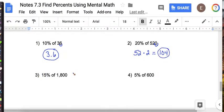Okay, number 3 is 15% of 1,800. So we need to do the 10% trick, which gives me 180. Now I have to take half of that so I can find 5%. Half of 180 is 90. And 180 plus 90 is 270.